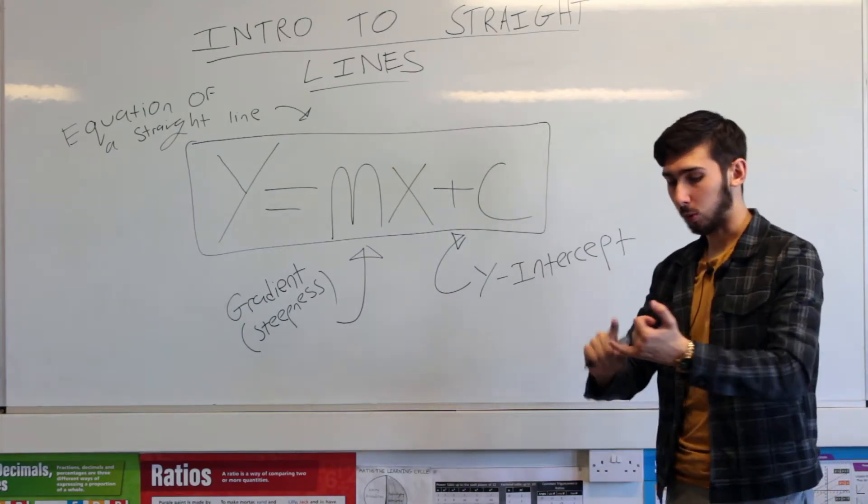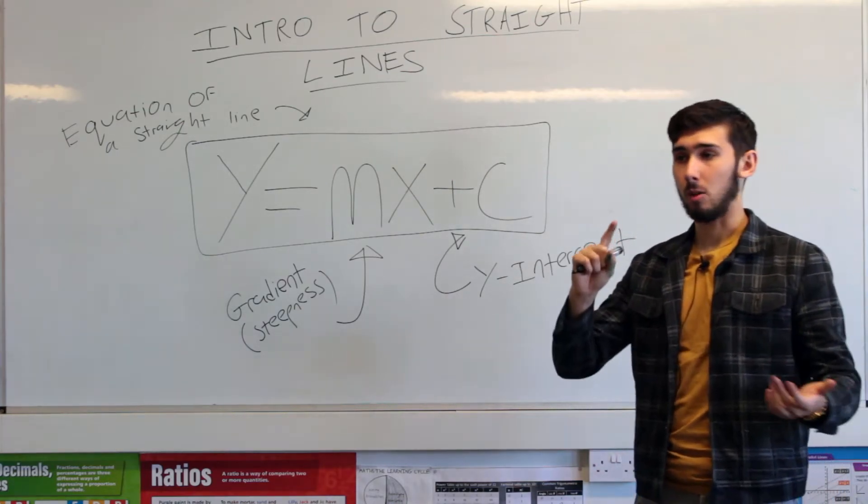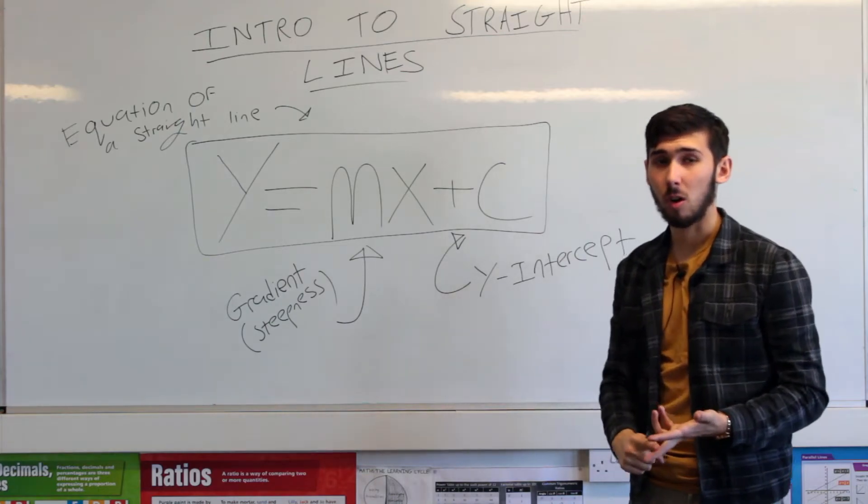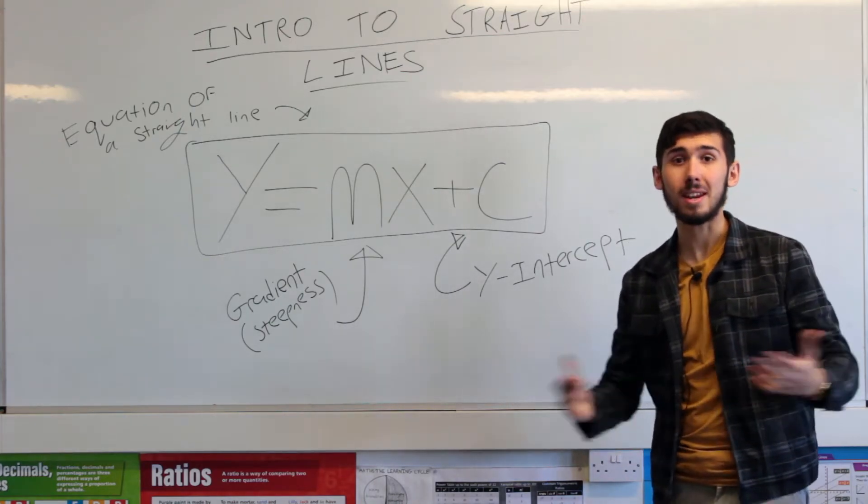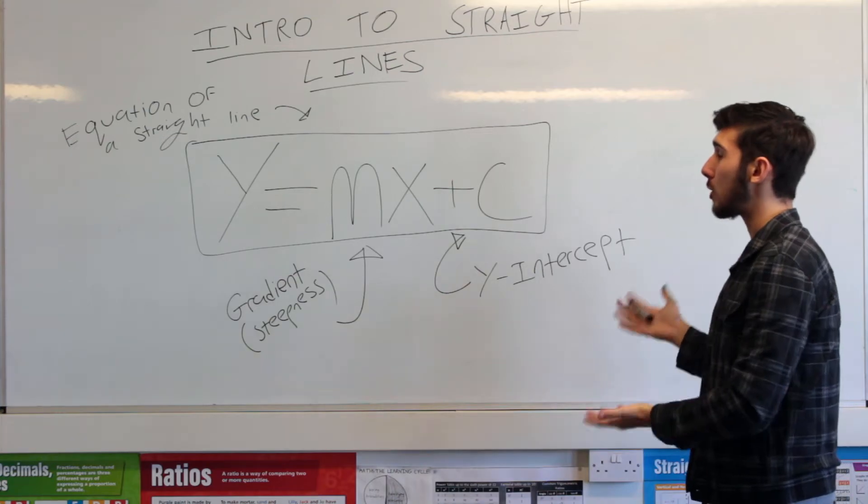Just like how we've looked at the equation of a quadratic, a cubic, reciprocal graphs, quartic graphs, and in the future we will look at many other graphs. This is the equation of a straight line.